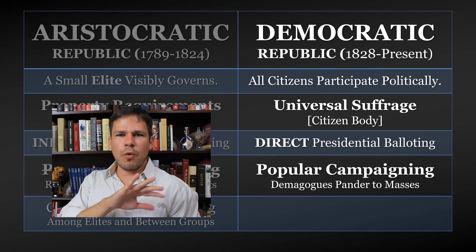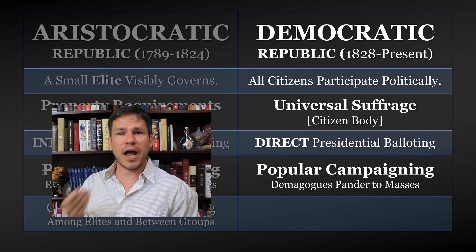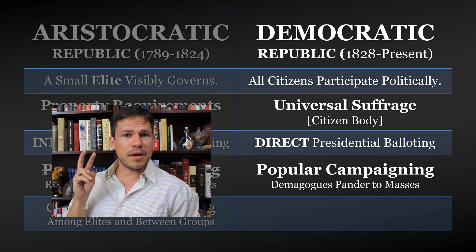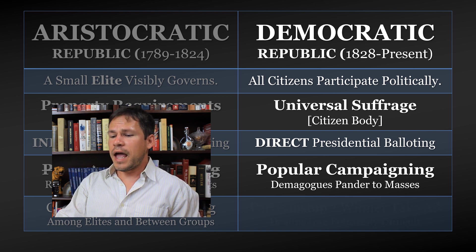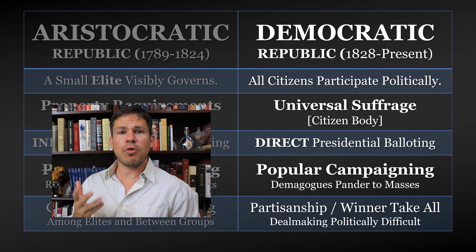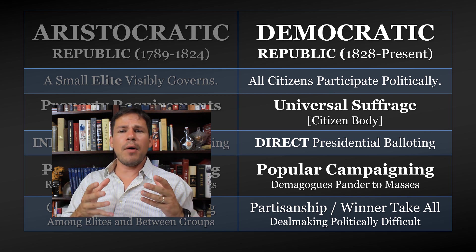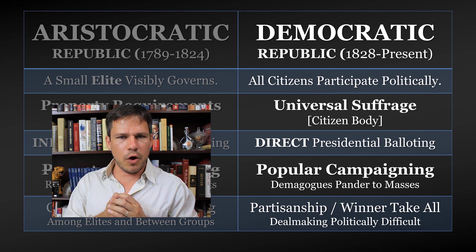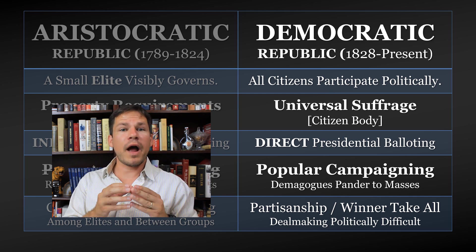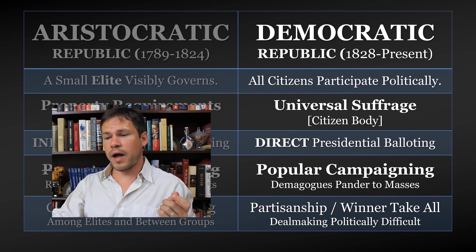In a democratic republic there is direct presidential balloting and an acceptance of popular campaigning — demagogues, pandering to the masses. Wherever you have democracy, you're going to have demagogues, because you get elected by appealing to the masses. Candidates who can't appeal to the masses typically don't get elected. Go through your presidential elections, especially in the 20th century — the more appealing candidate typically wins. Popular campaigning: Jackson certainly used it, the 1840 election with 'Tippecanoe and Tyler Too,' the log cabin and hard cider campaign. And there is an increased amount of partisanship and a winner-take-all mentality — deal-making becomes politically difficult.